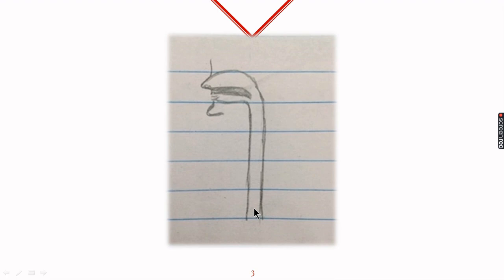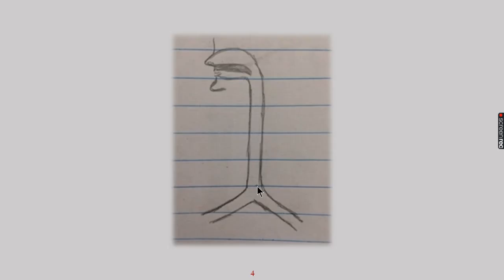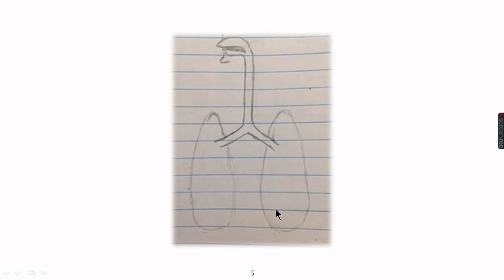Pharynx will continue in the form of windpipe or trachea which should be at least four lines longer. After that it will bifurcate into two branches called as bronchi and each bronchus will enter into lung.